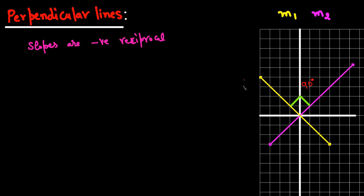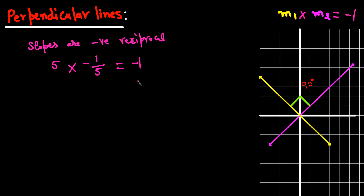If the slope of one line is m1 and the slope of another is m2, and when you multiply them the answer is -1, the lines are perpendicular. For example, if the yellow line's slope is 5, the negative reciprocal of 5 is -1/5, and 5 × (-1/5) = -1. So two lines are perpendicular if their slopes are negative reciprocals, or equivalently if the product of their slopes is -1.